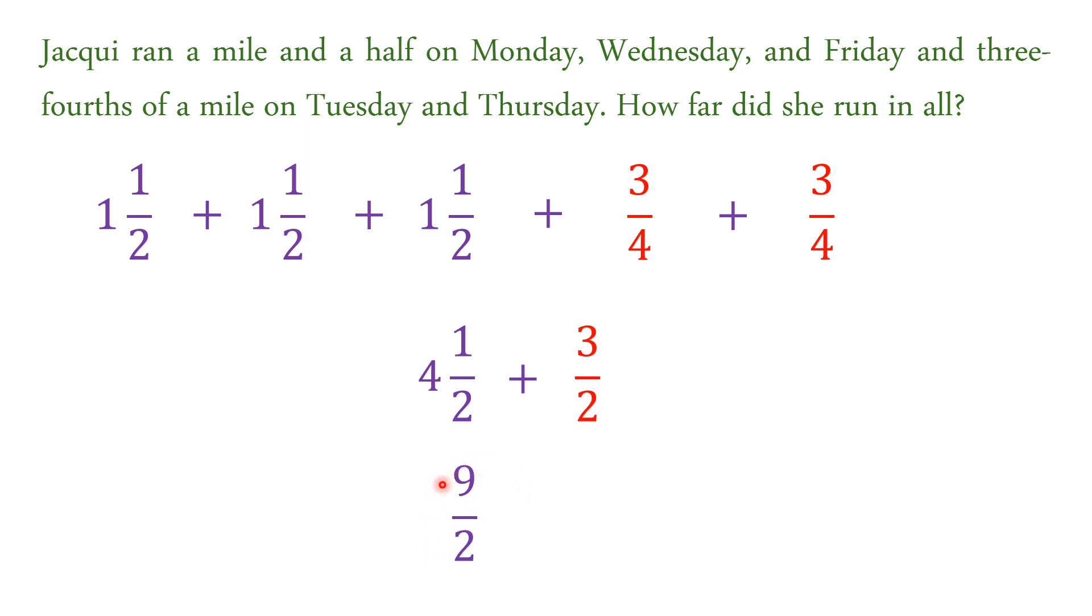But I have also another separate video about changing mix to improper form. And then just simply add it with the three halves. So nine halves plus three halves, nine plus three is just 12. And then copy the denominator too. And then we can reduce this. 12 is divisible by two, which is equal to six. So that means she ran six miles in total.